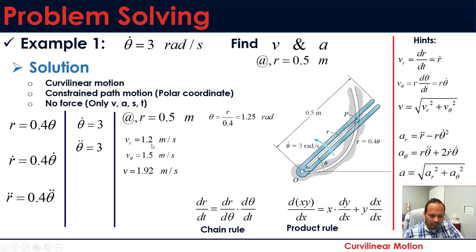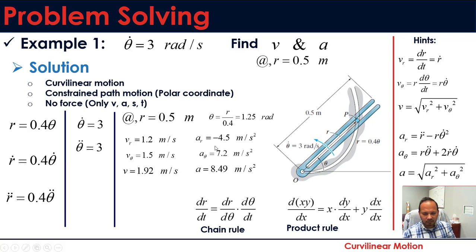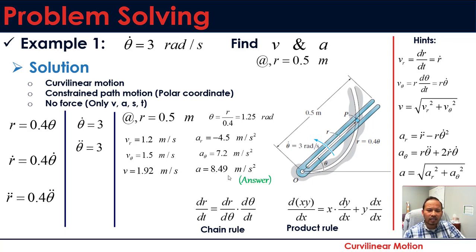Plugging all values into the velocity component equations gives the velocity components, with a total magnitude of 1.92 m/s. Doing the same for acceleration gives the acceleration components, with a total magnitude of 8.49 m/s².